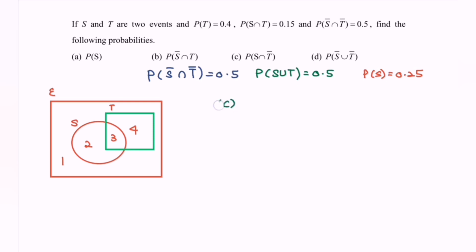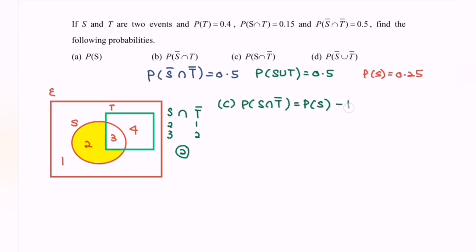For part C, we need P(S∩T'). From the diagram, S covers regions 2 and 3, and T complement covers regions 1 and 2. Their intersection is region 2. The formula is P(S) − P(S∩T). Substituting: 0.25 − 0.15 = 0.1. Therefore, P(S∩T') = 0.1.